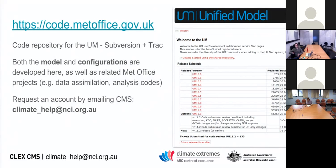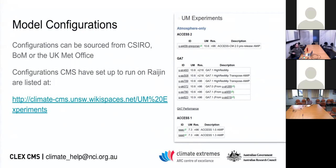We can set you up with an account for the Met Office code server — just email us at the Climate Help website. You can find all UM versions, documentation, and things like that listed there. CMS is able to set up model configurations to run at NCI, sourced from CSIRO, the Bureau, or the Met Office or other partner agencies, as long as it's on this central code server.